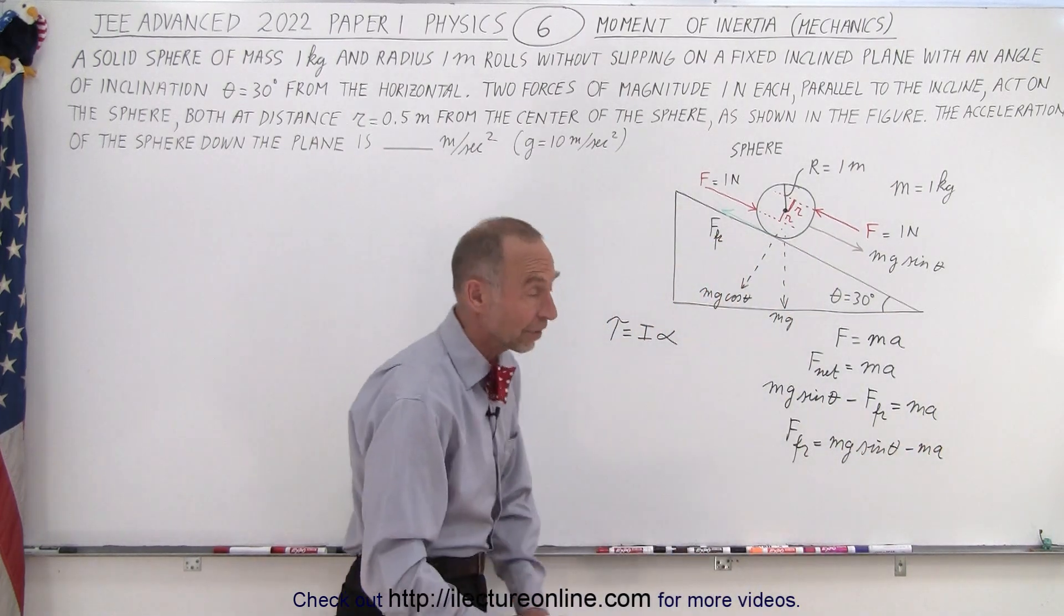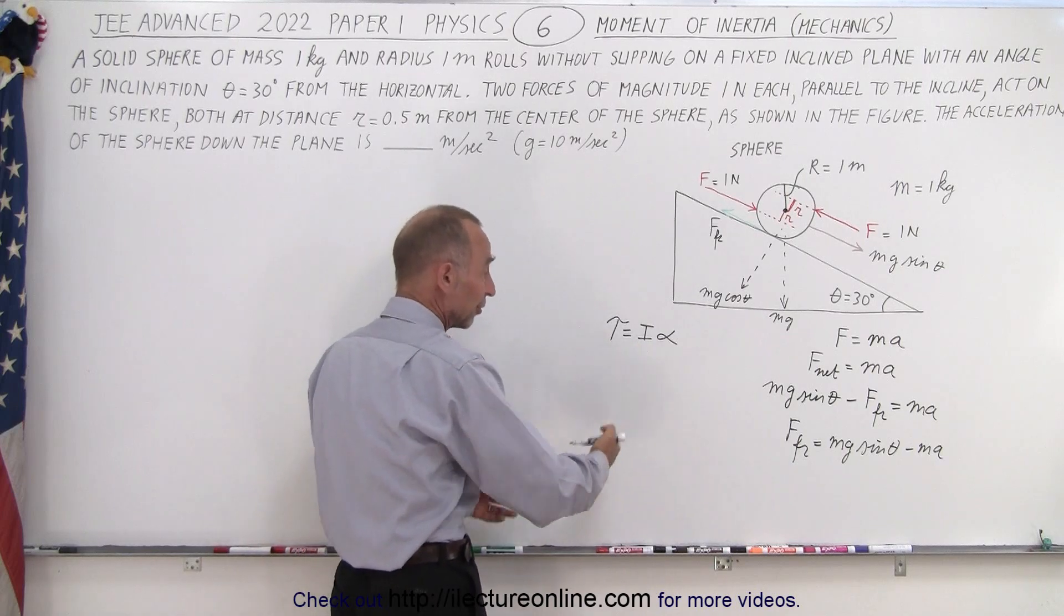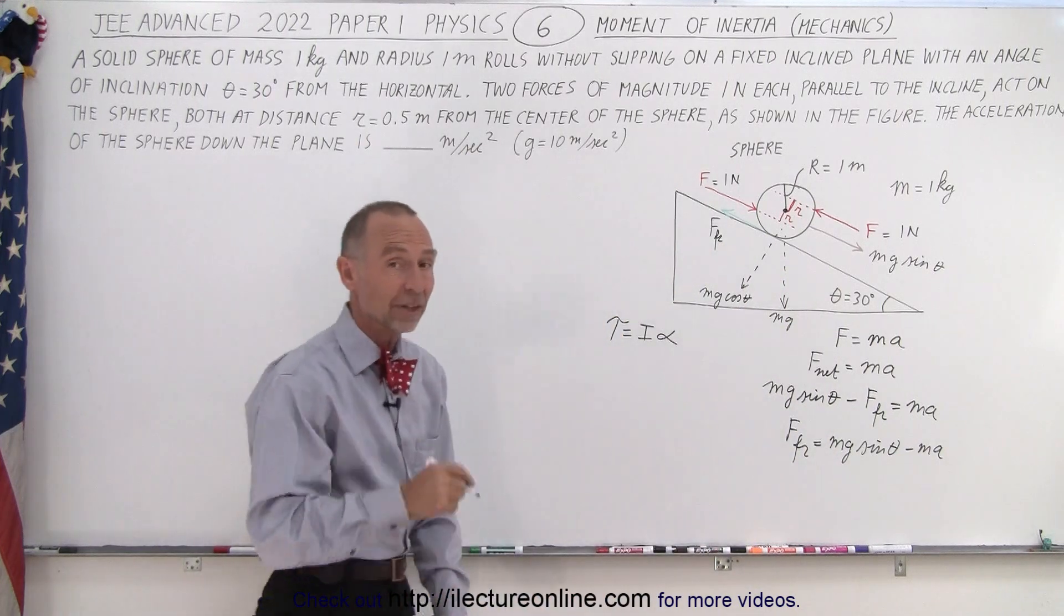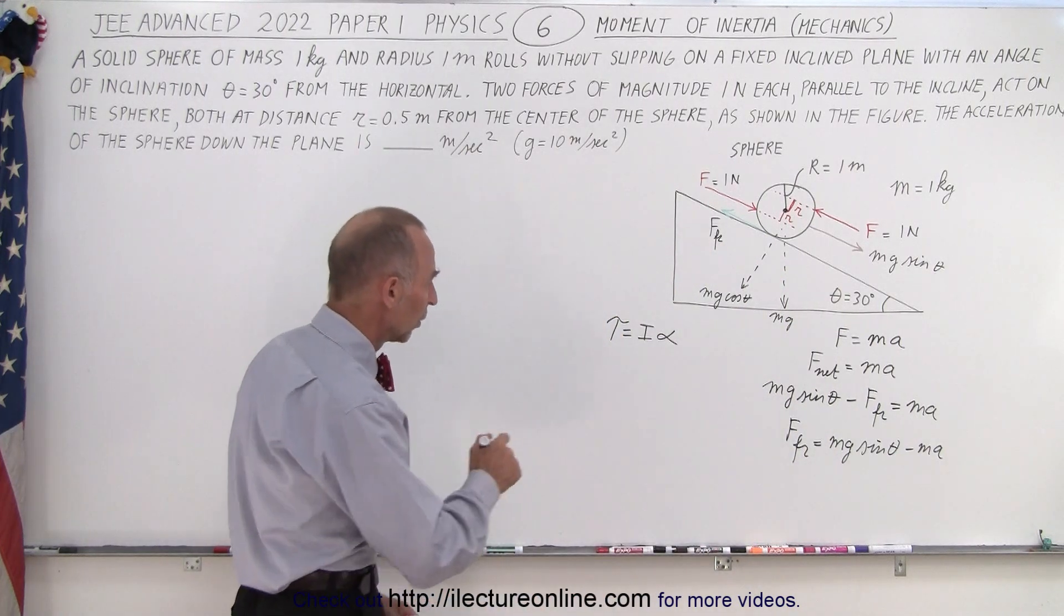Now, we're going to need that because on this side, we'll end up with the friction force. And we won't know what it is. But it will have to be equal to this, depending upon how fast it's accelerating downward.